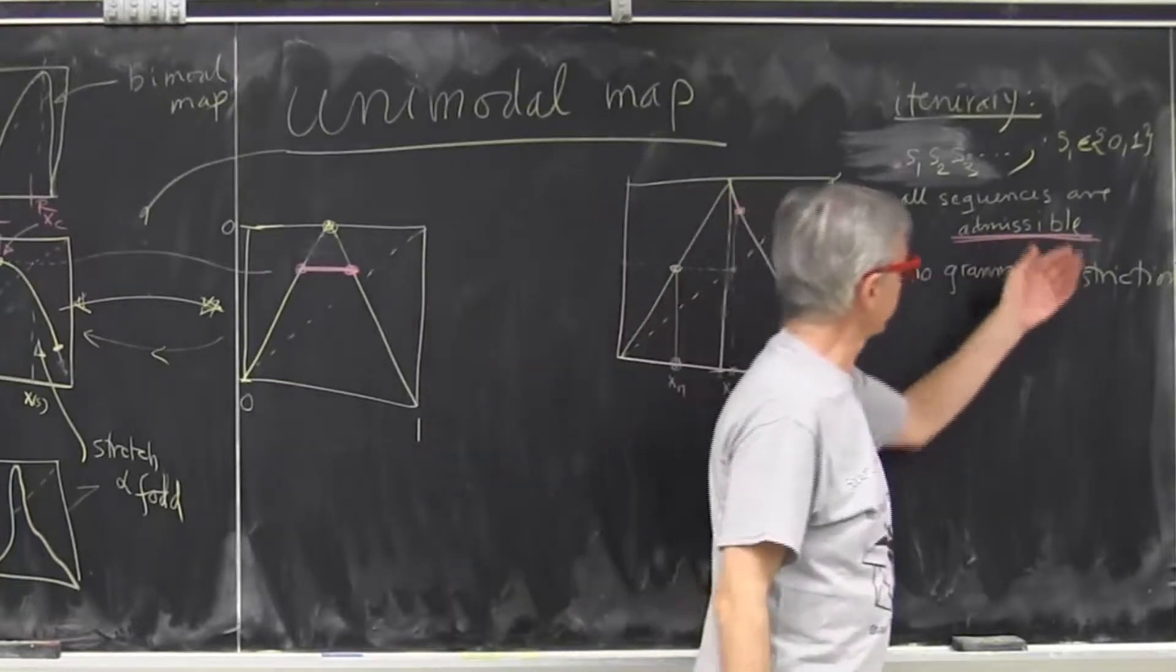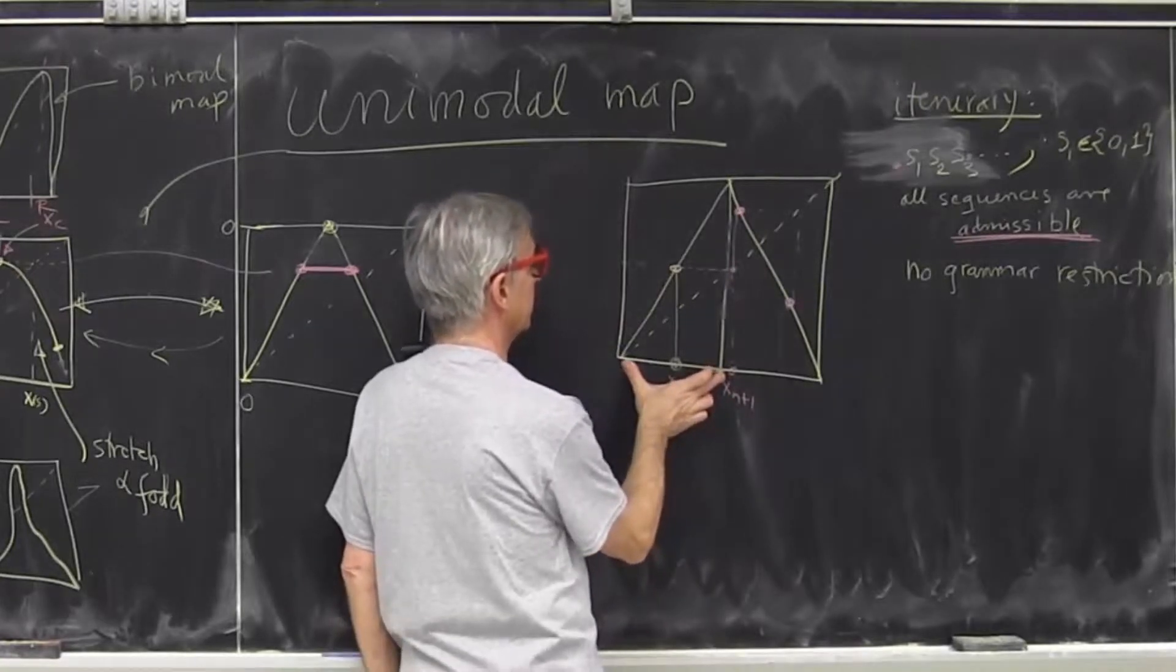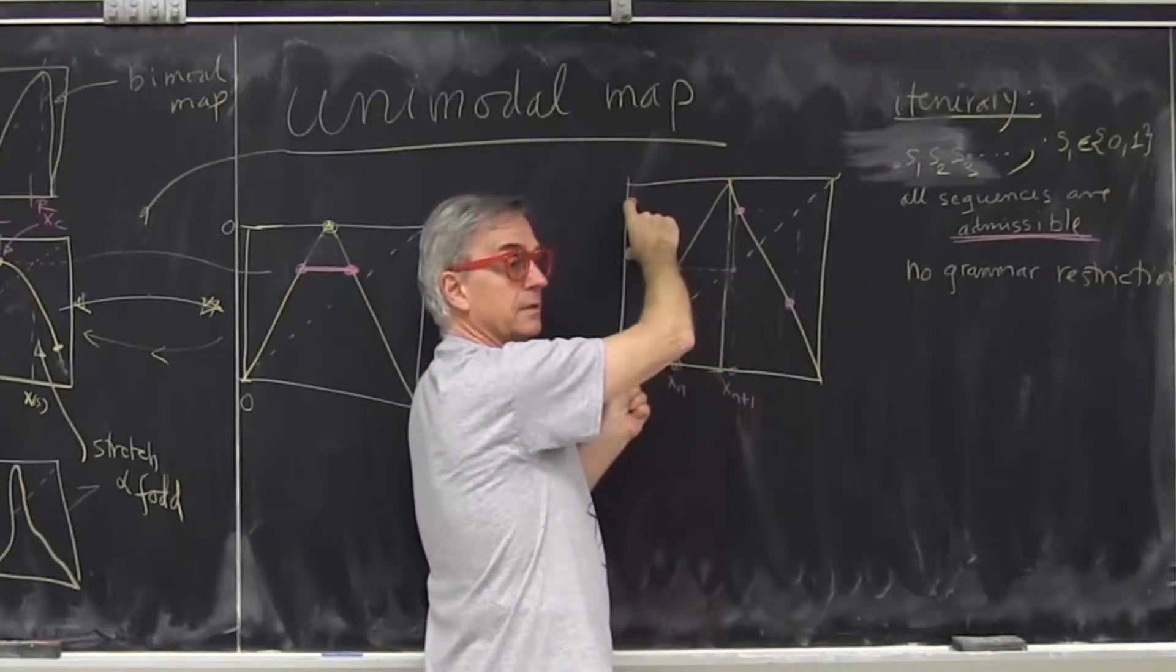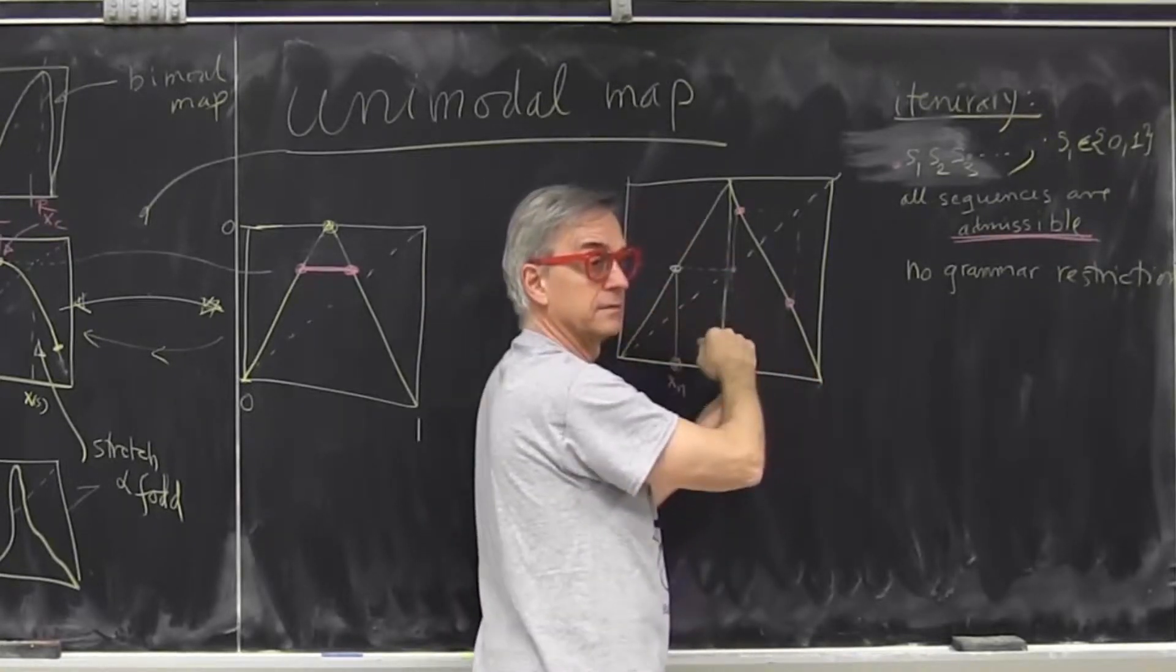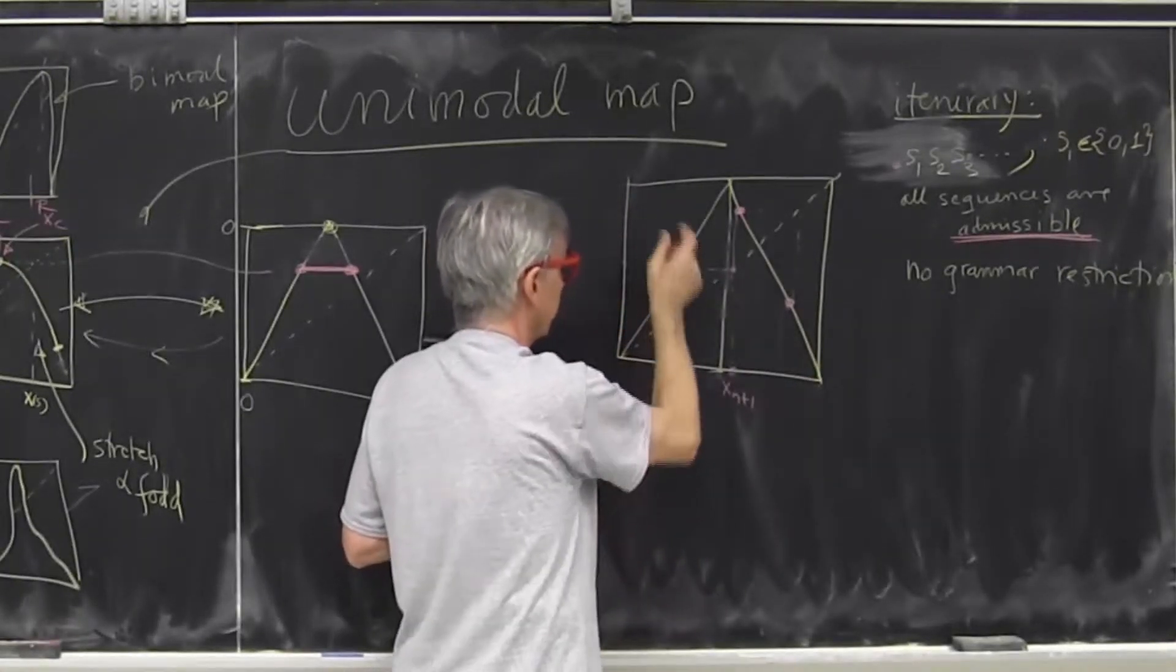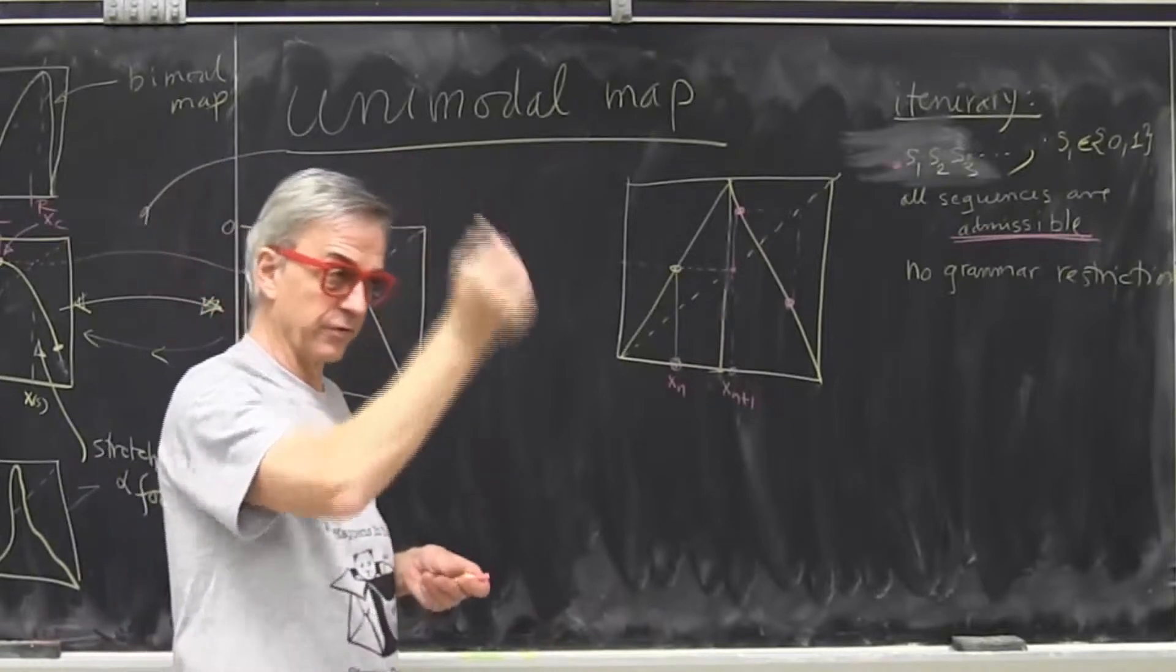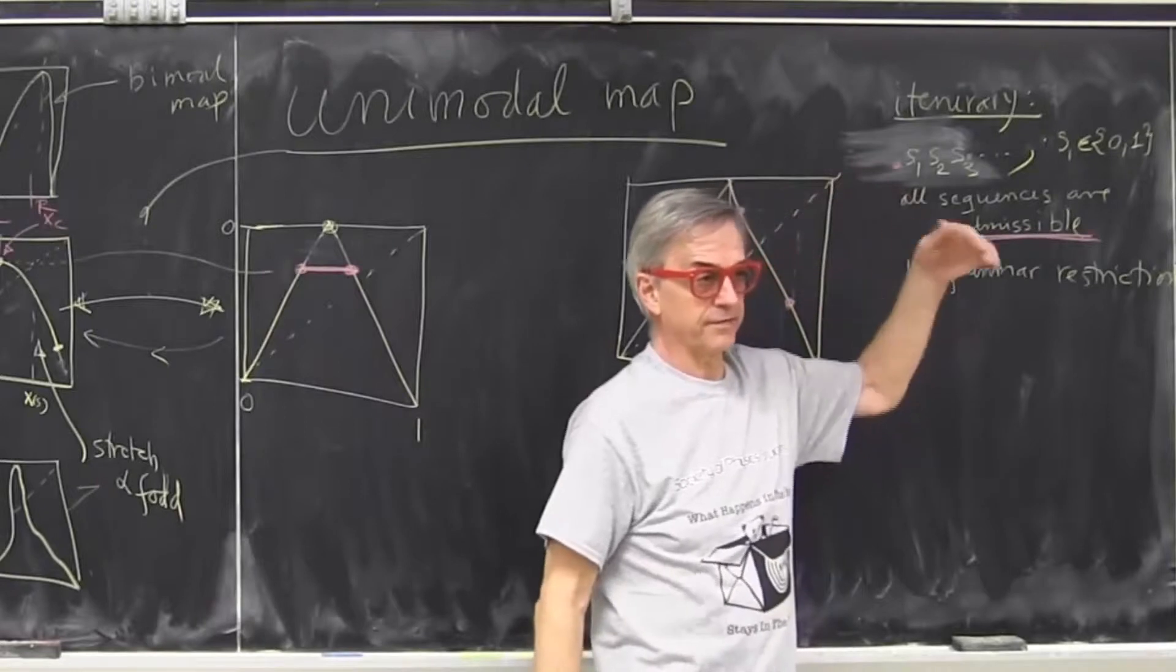And why are all sequences admissible? Because if you take any one interval, for example, left one, in one iteration, it stretches over both intervals. So if I'm here, I can land either left or right. Same thing here. If I start on the right, I can land left or right. Now I repeat. So no matter what little neighborhood I am, I'll eventually end up every place. So this is a beautiful example of ergodic sequences, that every normal number goes through all possible numbers. And there is no law that tells you, you must not do this.